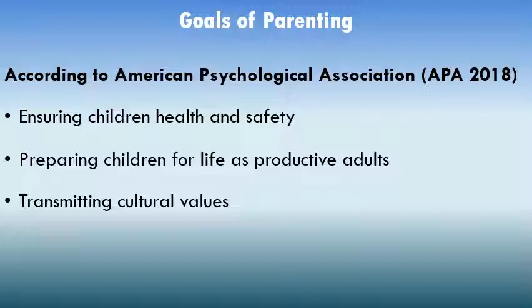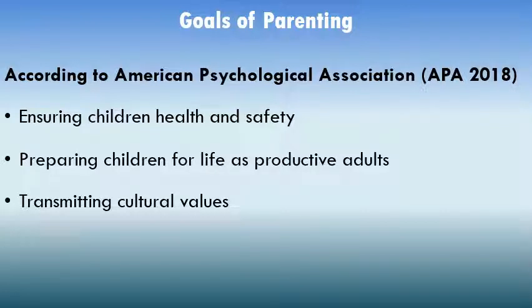We have some goals as to why we have parenting in all homes, and these goals are expressed by the American Psychological Association in 2018. There are three goals for any parenting style. One is to ensure children's health and safety. Secondly, preparing children for life as productive adults — many parents miss this step, which is why some adults are not productive and become antisocial. Third is transmitting cultural values from the previous generation to the current and next generation.